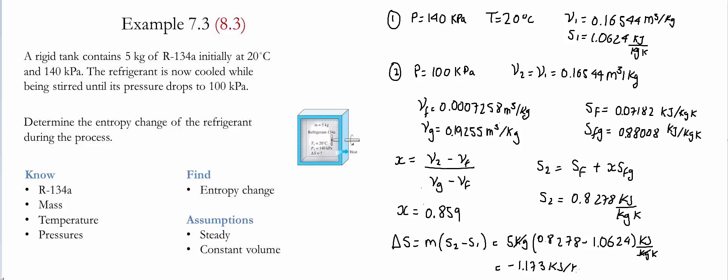The units are kilojoules per Kelvin. Note that this change of entropy is negative and this is not a violation of the second law of thermodynamics. The violation would have been if the change of entropy generated would have been negative.